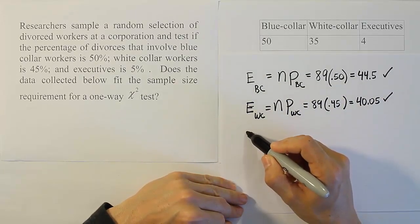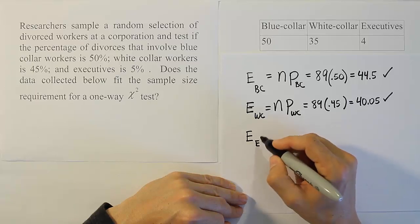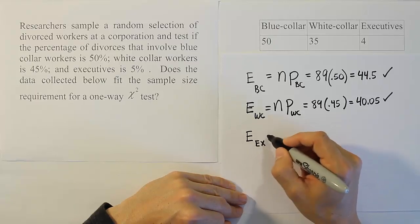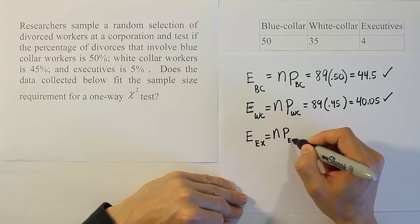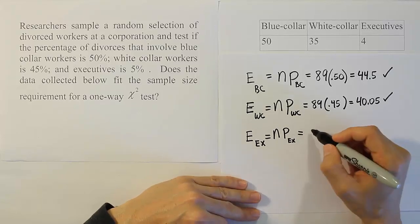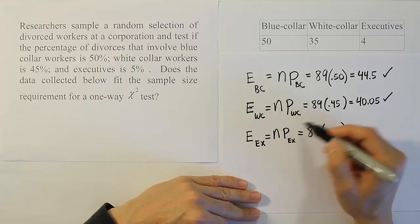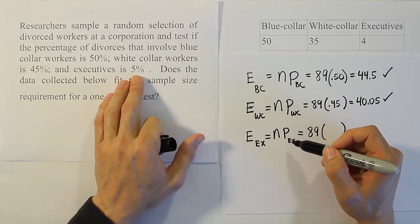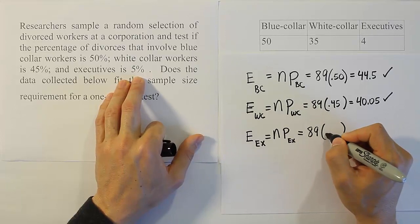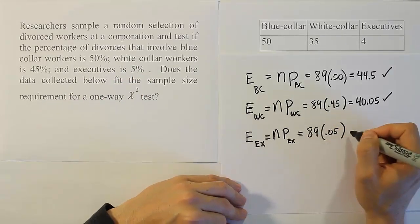The last category, executives, is going to be expected value for executives, which will be n times the probability that someone is supposed to be in the executive category. 89 people involved in the study, that's our n. And the probability that someone is an executive is 0.05.